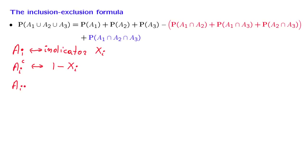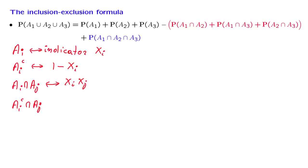If we have the intersection of two events ai and aj, their indicator function is xi times xj. This expression equals 1 if and only if xi equals 1 and xj equals 1, which happens if and only if the outcome is inside both ai and aj. The indicator of the intersection of the complements is the product (1 minus xi) times (1 minus xj).